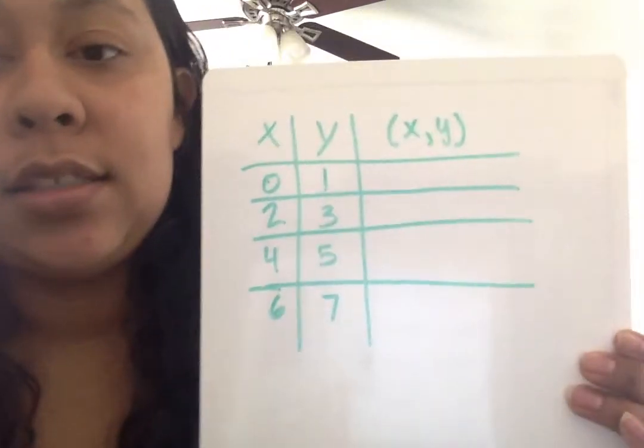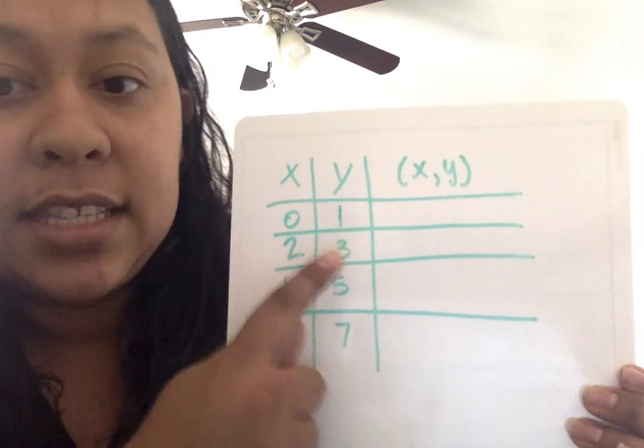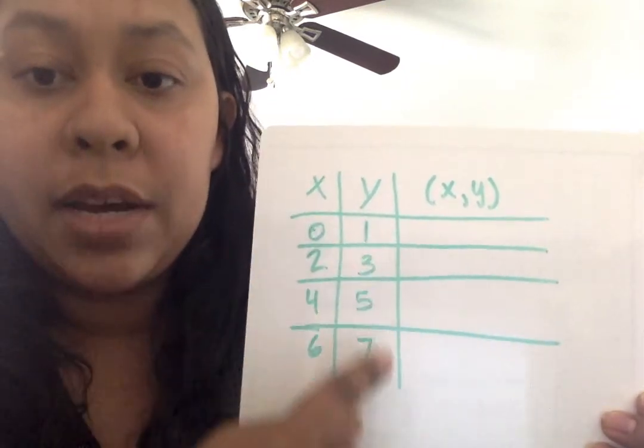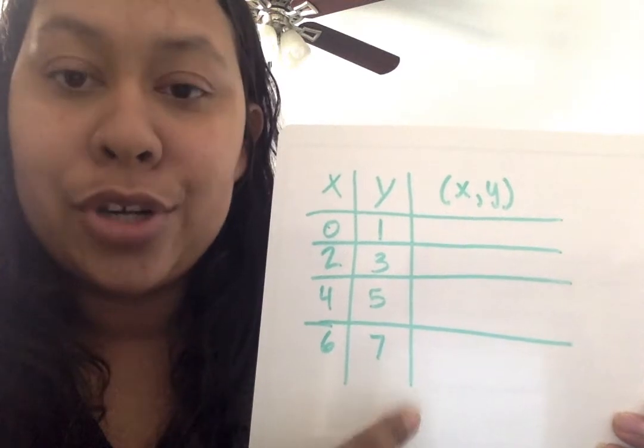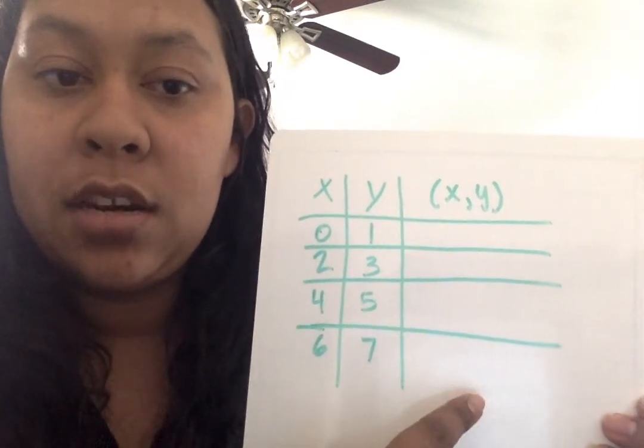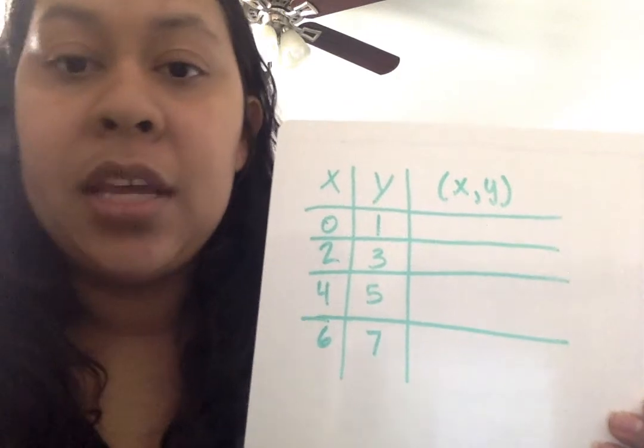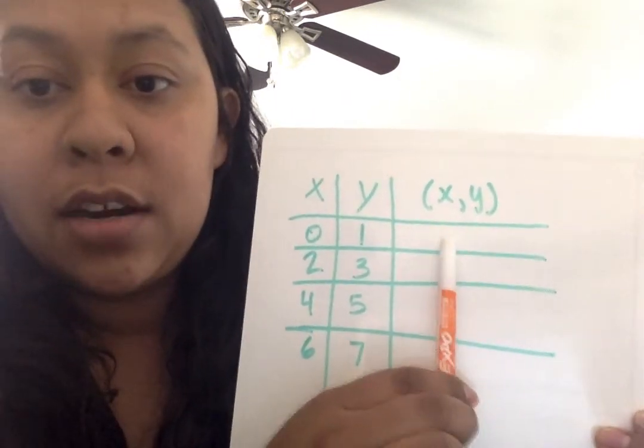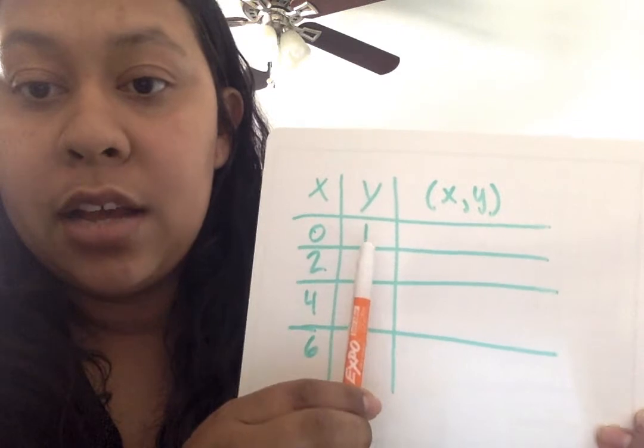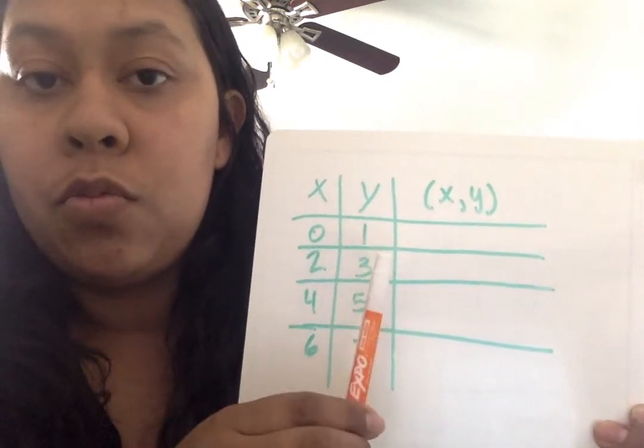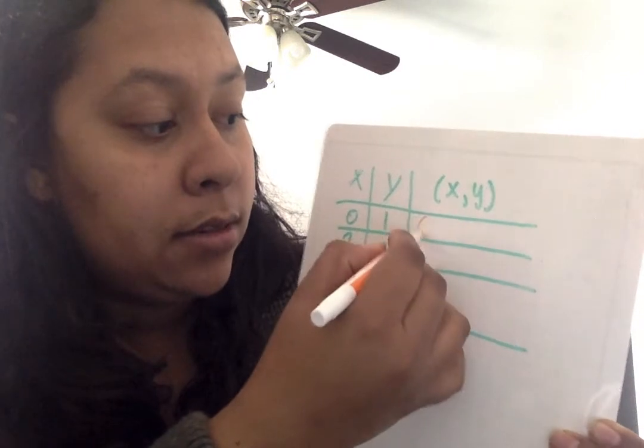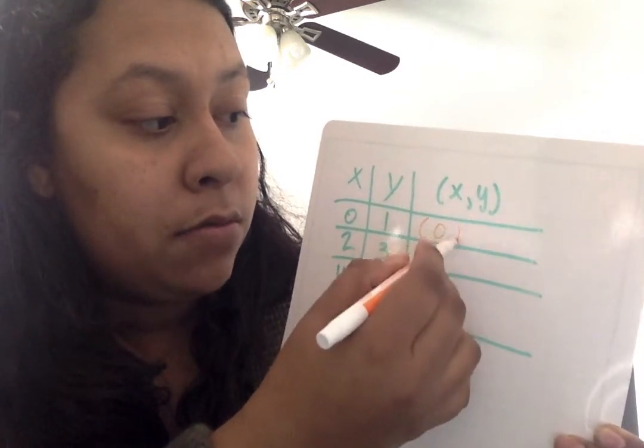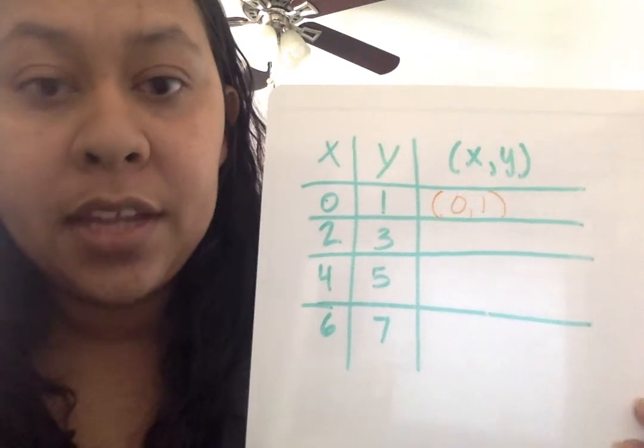Let's go over Problem 1 first. It says complete the chart, then plot the points on the coordinate plane below. So looking at the chart, it says X, Y, and it's giving you the X points and the Y points. So first, complete the chart by filling in the blanks. You need to make the coordinate pairs. For X and Y, I'm using the X and the Y on this same row. So I have 0, 1, so we're going to write parentheses, 0, 1, parentheses. There's your first one.